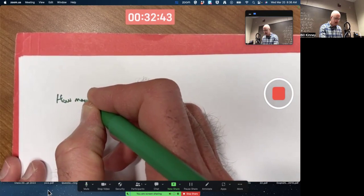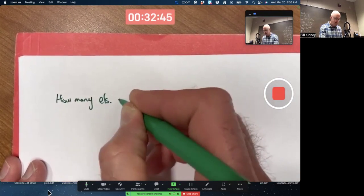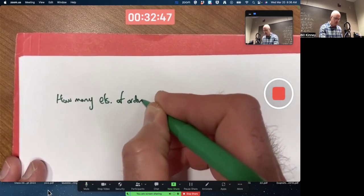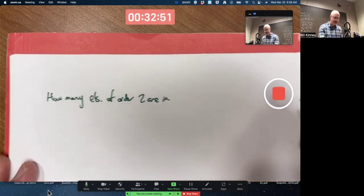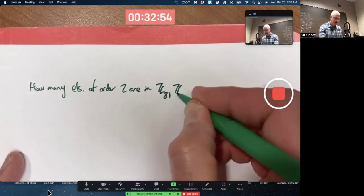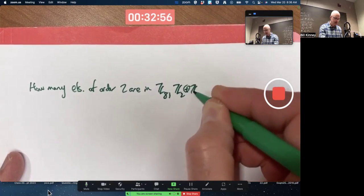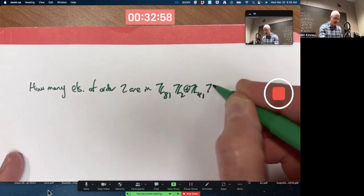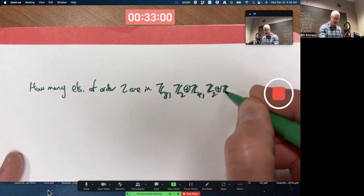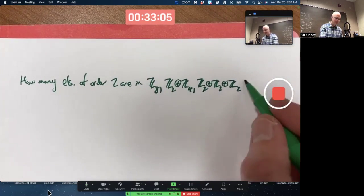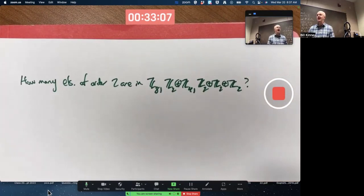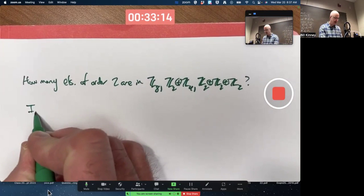How many elements of order two are in Z8, the external direct product of Z2 with Z4, and the external direct product of Z2 with itself having Z2 show up three times? You could try to figure out in each case what the elements of order two are. Let's go ahead and do it that way.